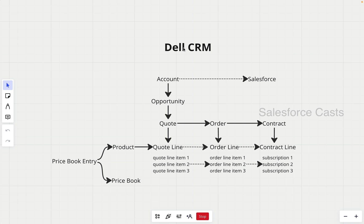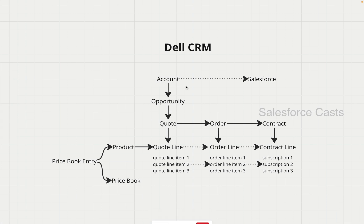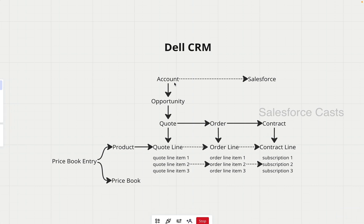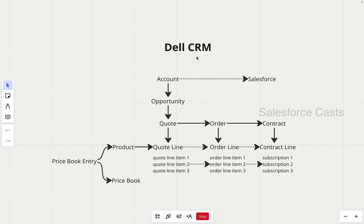When it comes to the end-to-end flow, everything starts with account. In the Salesforce ecosystem, account, customer, and client mean the same thing. If you navigate back to the Salesforce org of Dell and click on the accounts tab, you'll find a bunch of records. Each and every record represents a customer of Dell. We are interested in a single record that represents the organization Salesforce — so Salesforce is the customer of Dell in this case.